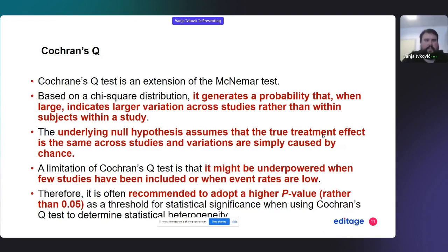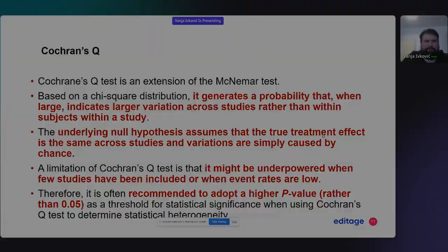In summary, Cochrane Q is a widely used statistic that shows us: the greater the Q, the greater the heterogeneity. However, it has certain limitations, which is why it is supplemented by the I-squared statistic.